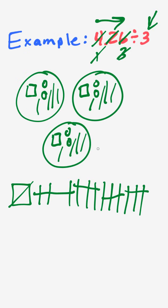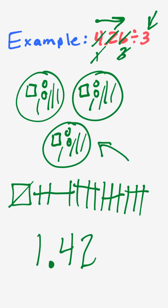Now to get our answer, we just count what's inside one of the circles. I have one whole, and the rest is on the decimal side. Starting with the tenths: one, two, three, four tenths, and one, two hundredths. So that's how you write the answer: one and forty-two hundredths.